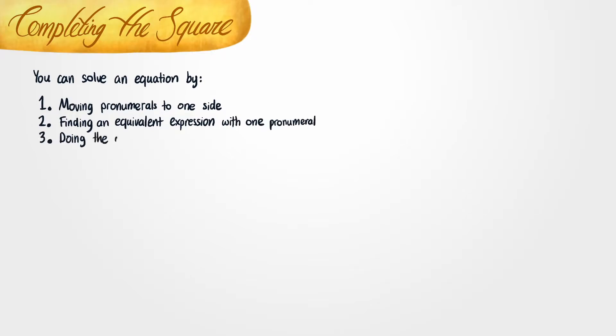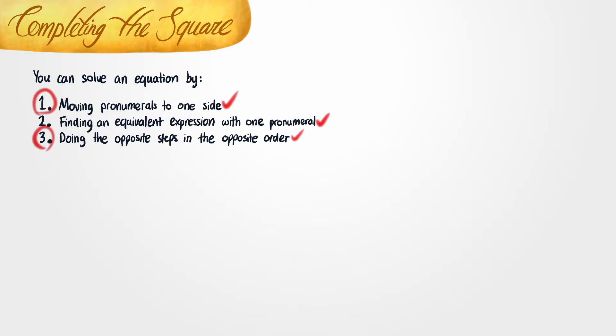In the previous lesson, we showed a general technique that you can use to solve any equation. We said that if you wanted to solve an equation, you first move all pronumerals to one side, find an equivalent expression with only one pronumeral, and then do the opposite steps in the opposite order. We also remarked that step one and step three were pretty easy, but step two is where most of the trouble lies. Now it turns out that if you're trying to solve equations that contain quadratics, step two is still going to be by far the hardest step.